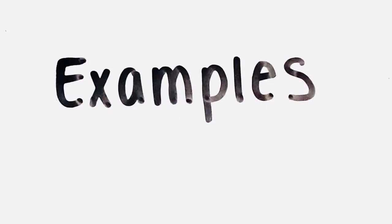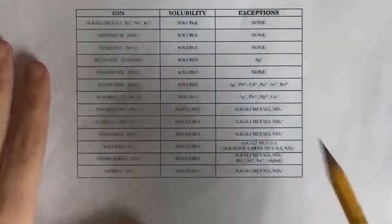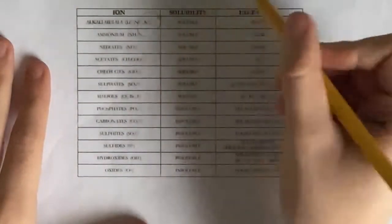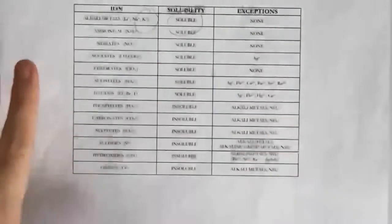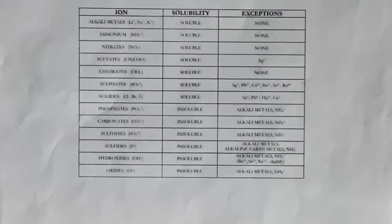First, let's look at some examples in the soluble section to see what their state would be. Let's take potassium chloride as an example. To find out its state, you would find potassium in the ion section. We see that potassium is part of the alkali metals, and according to the table, it is soluble since there are no exceptions. This means that potassium chloride is soluble, which means it's aqueous.